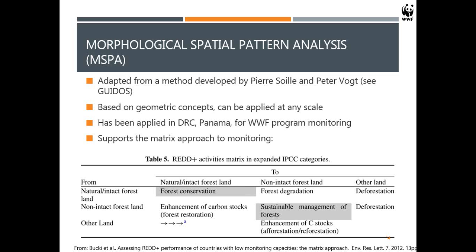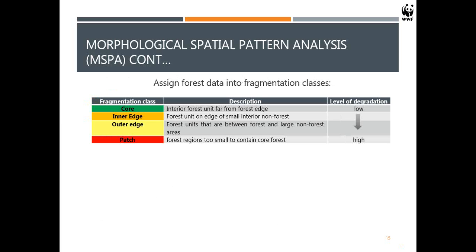Vogt et al. published a paper on how countries with limited resources can tackle the idea of degradation monitoring using this matrix approach — looking at changes from natural intact forests to non-intact forests. I explored the GUIDOS toolbox — it's free to download, open source. The only problem was that in the Democratic Republic of Congo, the data surpassed the data limits for GUIDOS. So I took the exact concepts from those articles and assigned four types of fragmentation using MSPA.